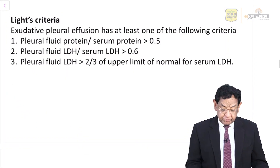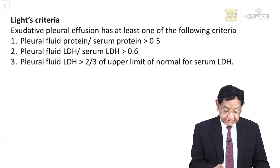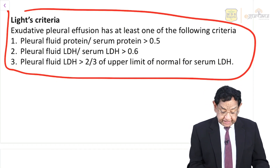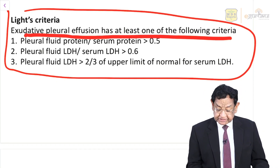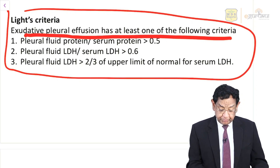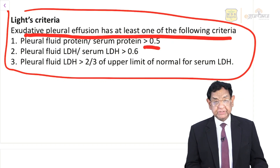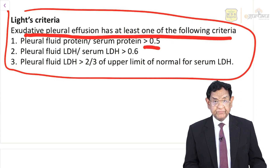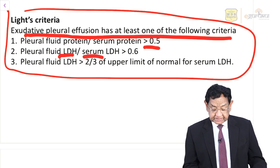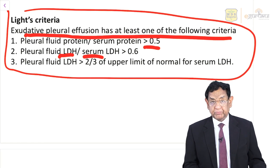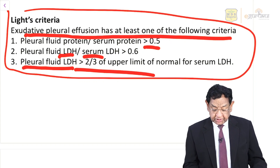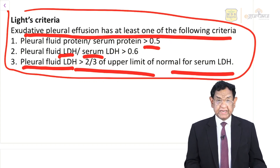Light's criteria is one of the most important topics — you cannot afford to forget this. For exudative pleural effusion, at least one of the following criteria must be met: pleural fluid protein to serum protein ratio should be more than 0.5; pleural fluid LDH to serum LDH ratio should be more than 0.6; or pleural fluid LDH should be more than two-thirds of the upper limit of normal for serum LDH.